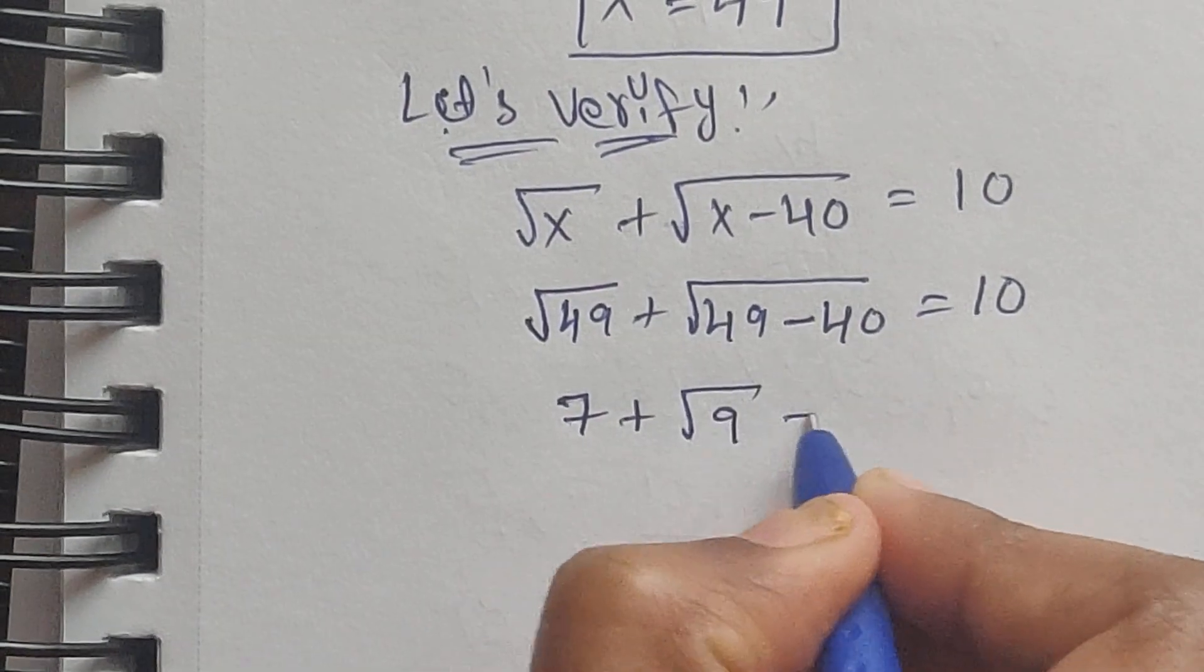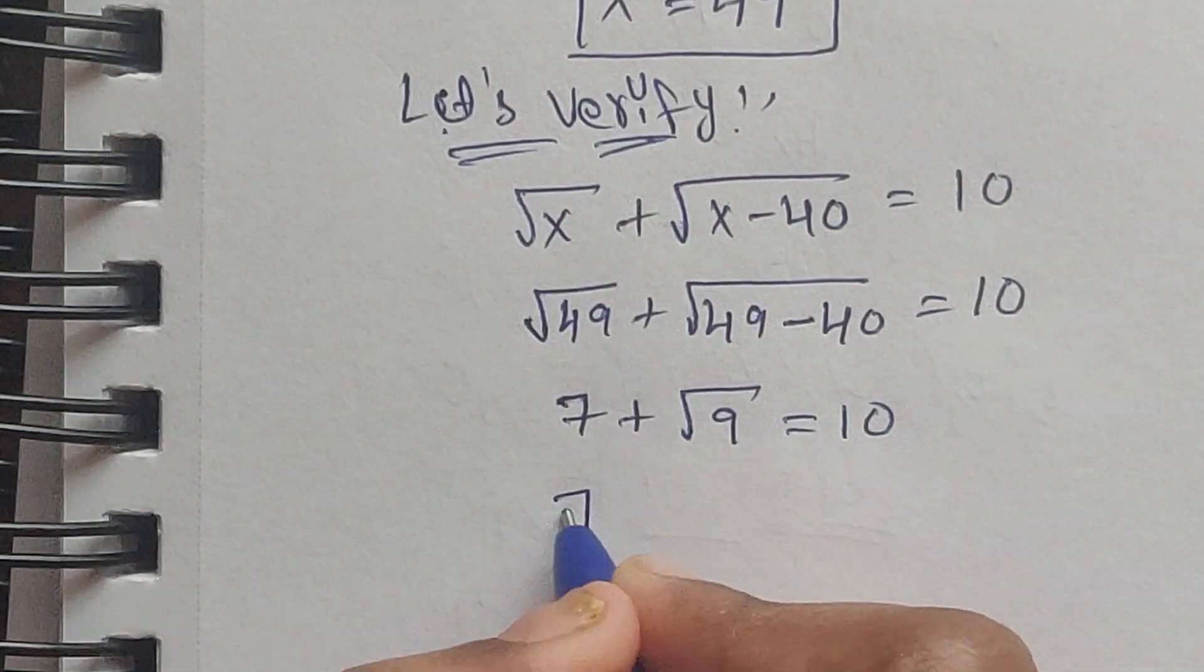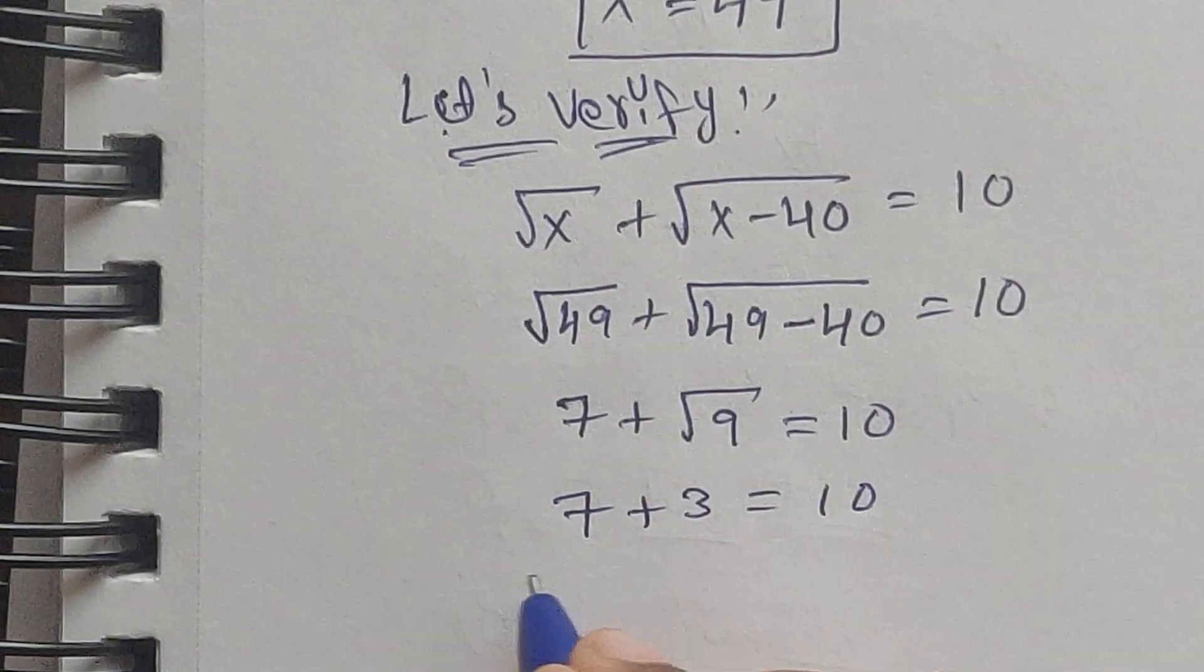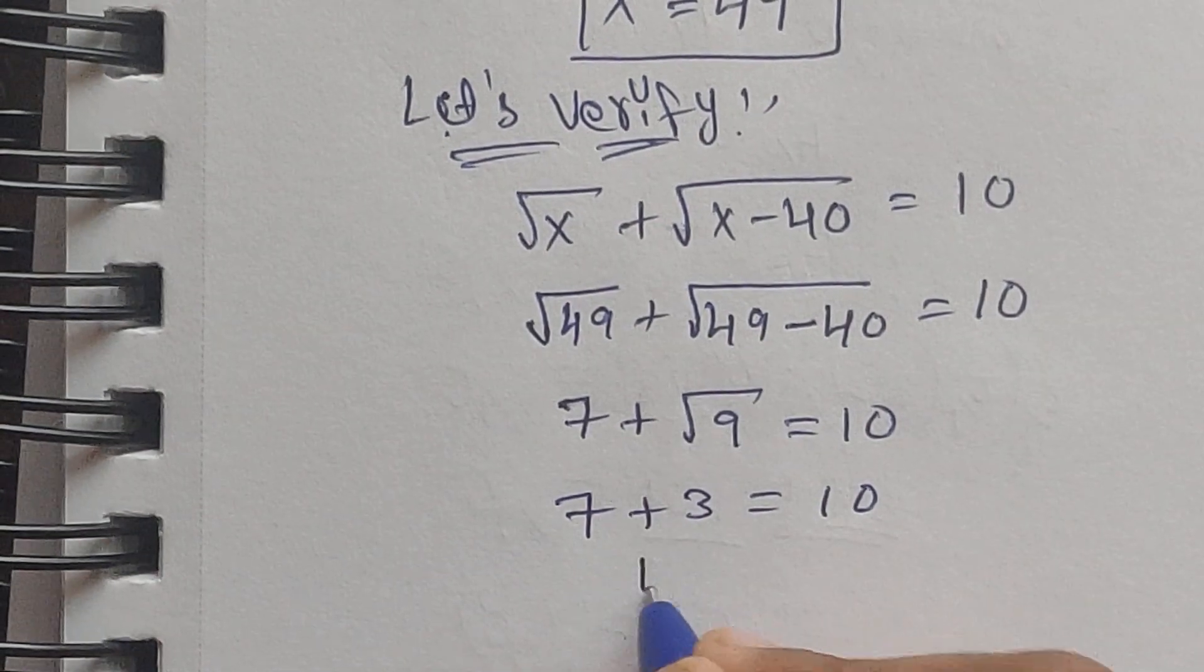7 plus square root of 9 is 3 equal to 10. So 7 plus 3 which is equal to 10.